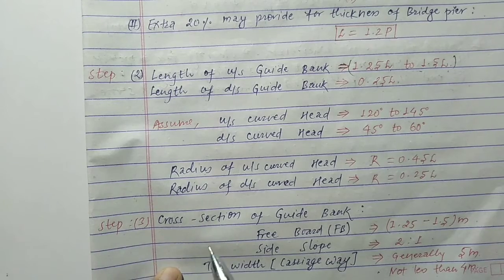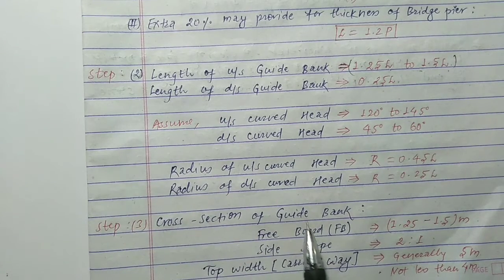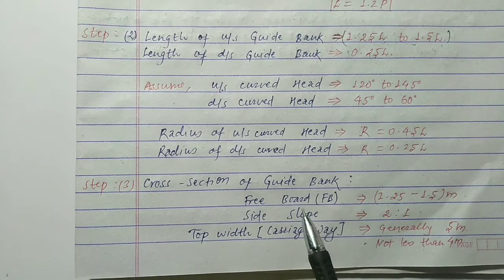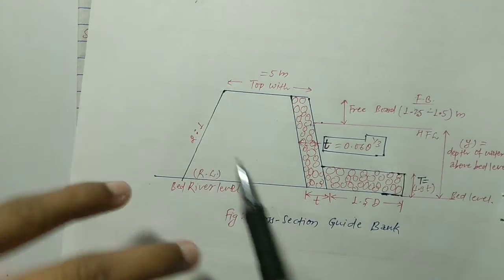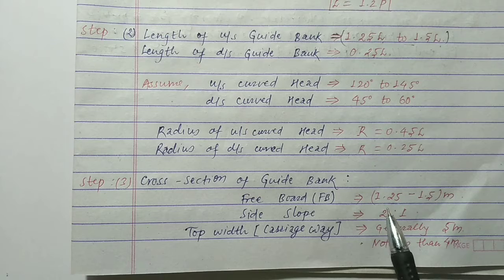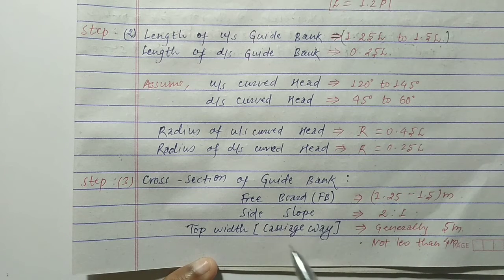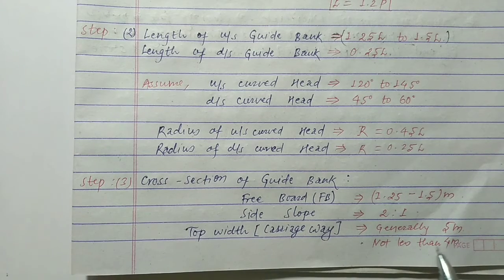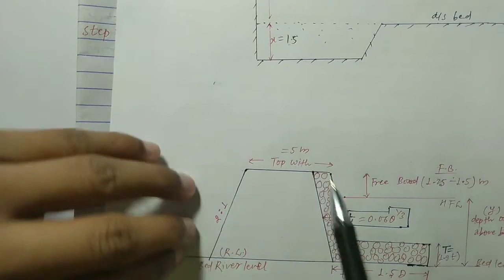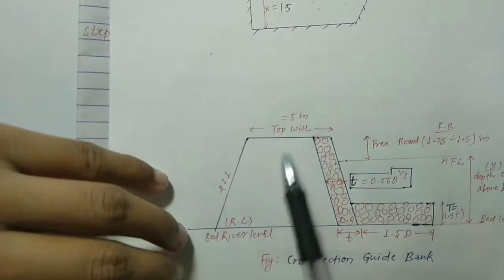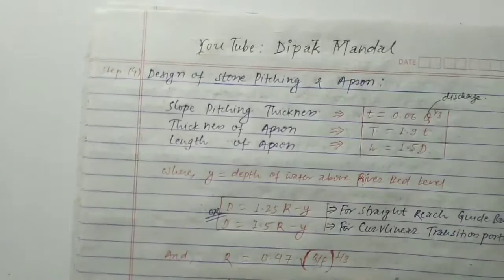In step three, we design the cross-section of the guide bank. The freeboard is taken as 1.25 to 1.5 meters. The side slope is taken as 2:1. The top width, also called carriageway, is generally taken as 5 meters and should not be less than 4 meters — we prefer 5 meters. You can see the top width of the guide bank in this figure.